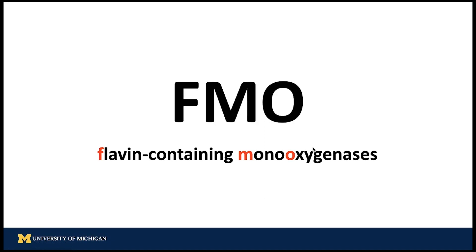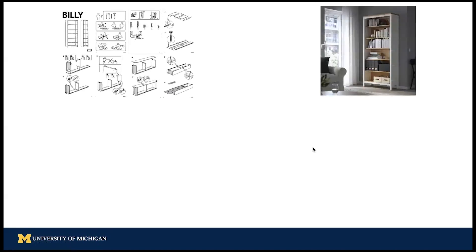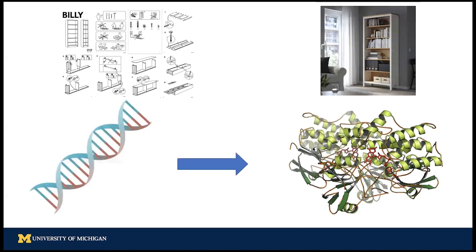This process is like you bought a bookcase from Ikea, and you have to read the instruction manual to assemble it at home. A gene is like the instruction manual that contains information to make a product, which is the protein.